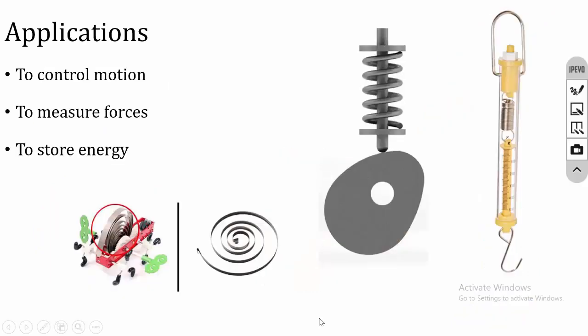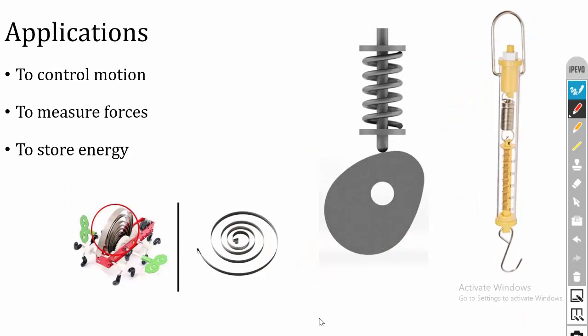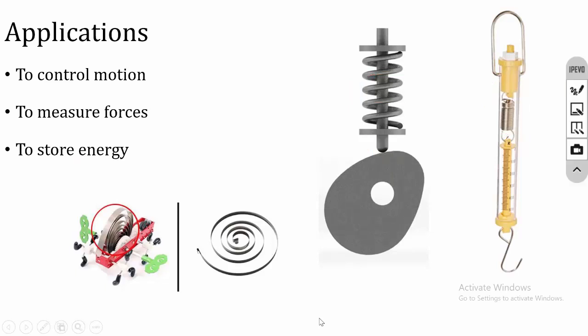In cam and follower systems, the spring maintains contact between the cam and the follower. In a spring balance, the spring measures weight. In watches and toy cars, the spring stores energy — when you wind the key, the spring absorbs your energy, and when you release it, the toy car moves due to the stored energy.